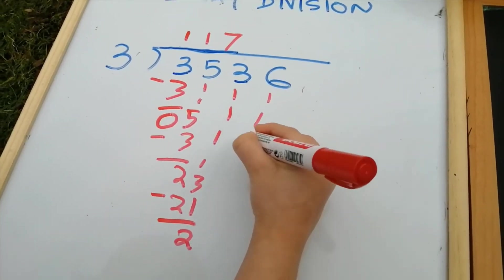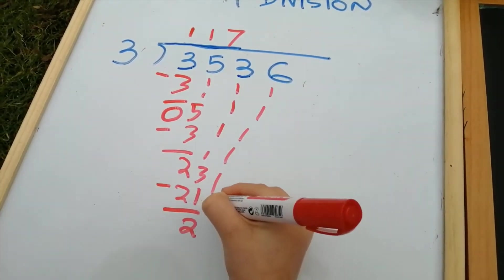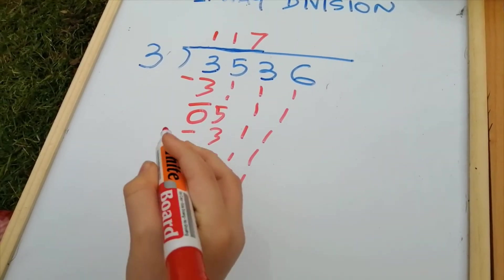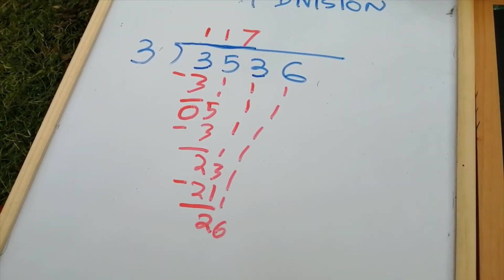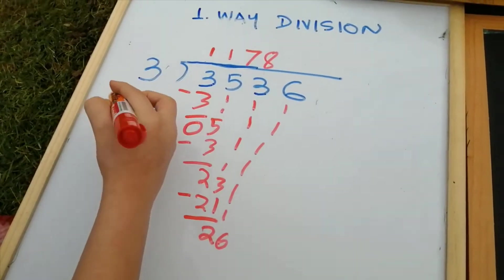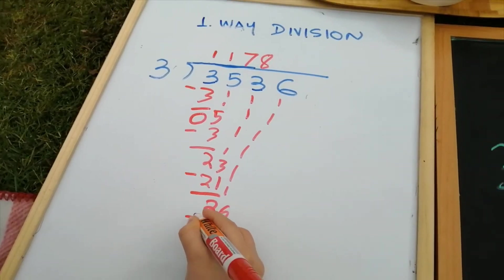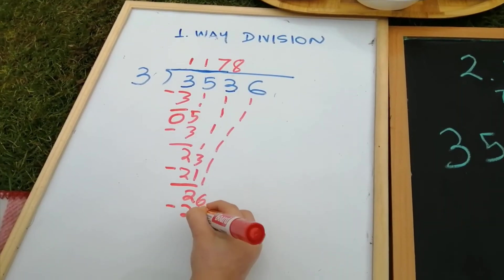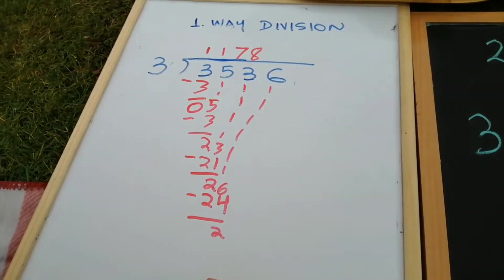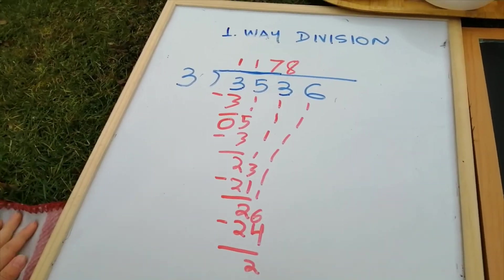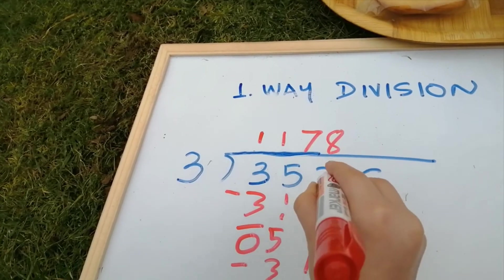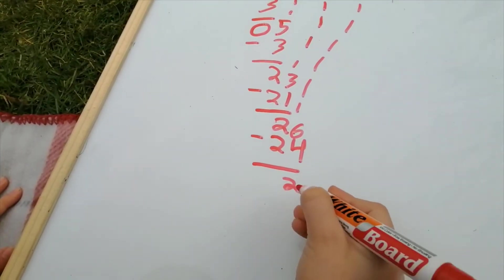Put the next number down — six. How many times is three in twenty-six? Eight. Three times eight is twenty-four. Equals two. Answer: one thousand one hundred twenty-eight. Remainder two.